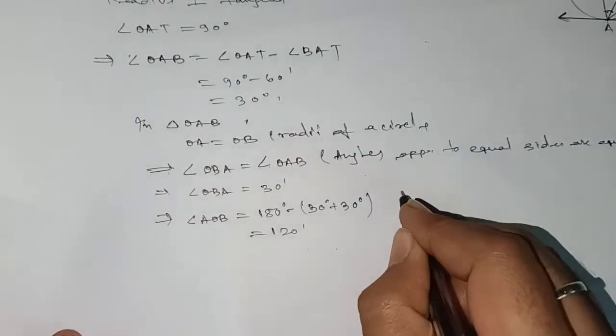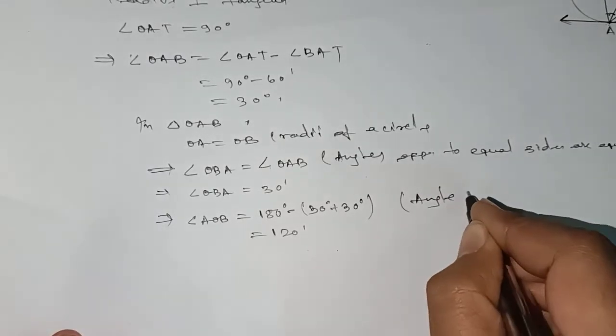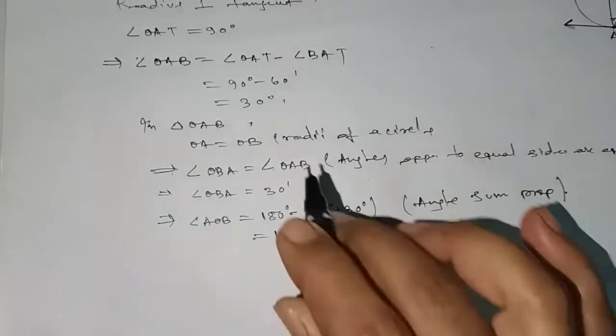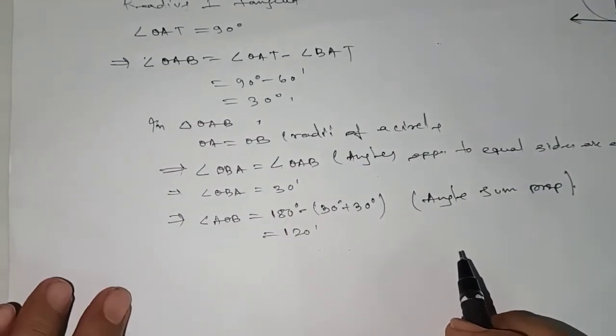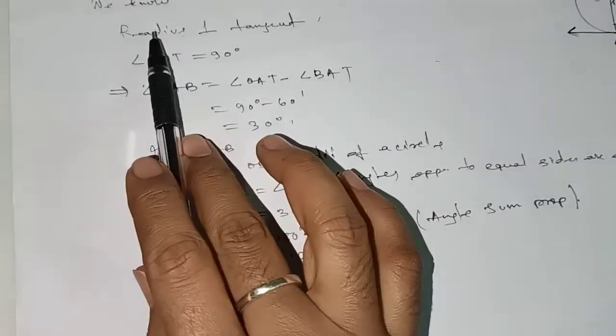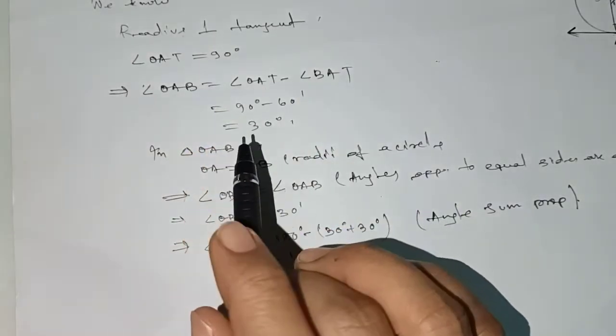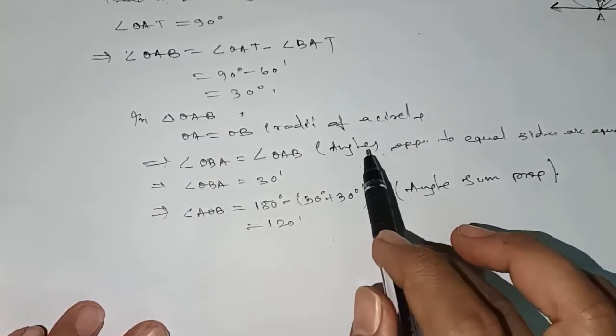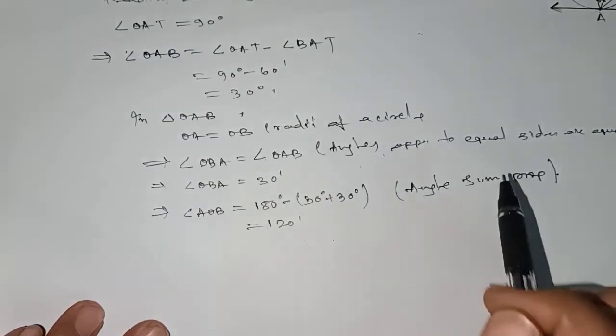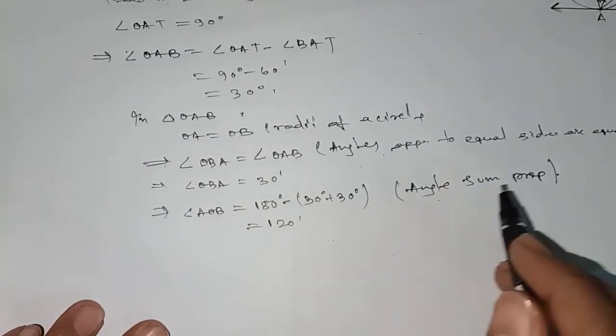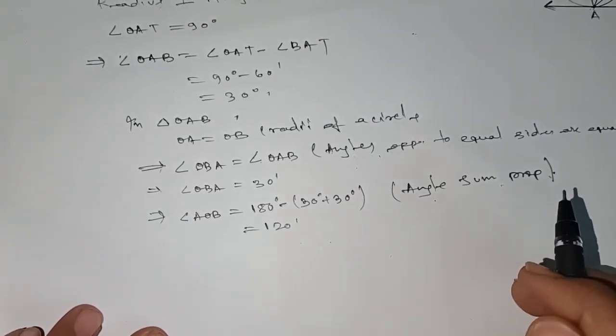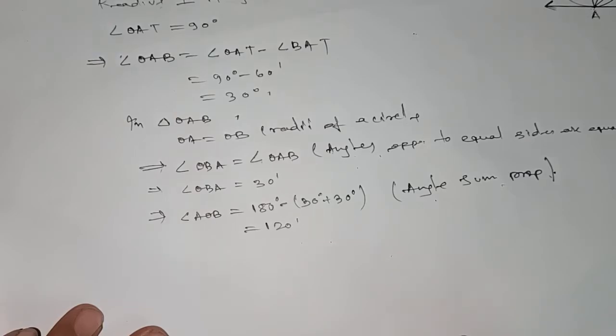That is 120 degrees, by angle sum property. In this problem we are applying several concepts: first, radius is perpendicular to the tangent; second, radii of a circle; third, angles opposite to equal sides are equal; fourth, angle sum property which we have already seen in class 9.